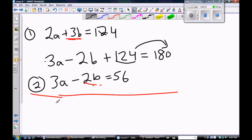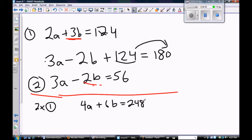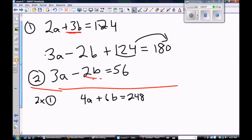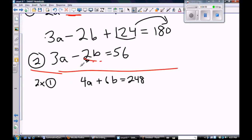So I'm going to make this into 6b and I'm going to make this into negative 6b. And that means I have to multiply equation number one times 2. So multiplying equation one times 2 would give me 4a plus 6b and 124 times 2 is 248. And then I need this to be a 6, so I need to multiply 3 times that second equation, so that gives me 9a minus 6b and 3 times 56 is 168. And again, I'm adding.